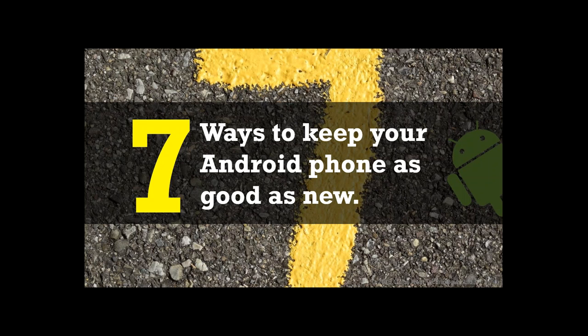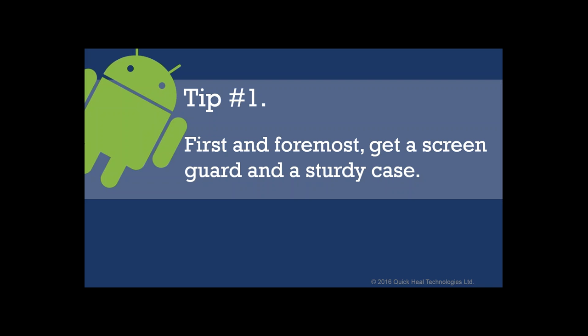The seven ways to keep your Android phone good as new: first and foremost, the moment you buy a brand new phone, get a screen guard. A screen guard is a protective plastic layer you paste on the face of your phone — the touch screen. You also need to get a sturdy case, which is a panel that attaches to the rear part of your phone. This saves your phone from cracks, bruises, and cuts if you drop it.